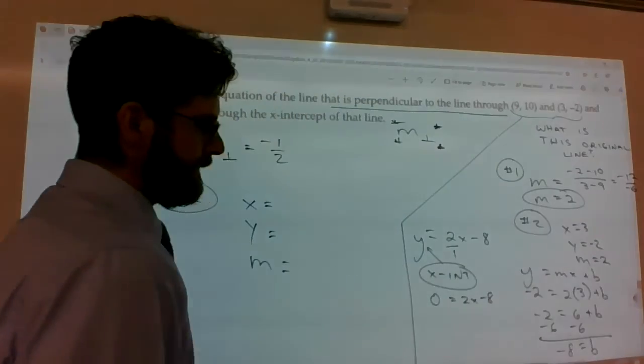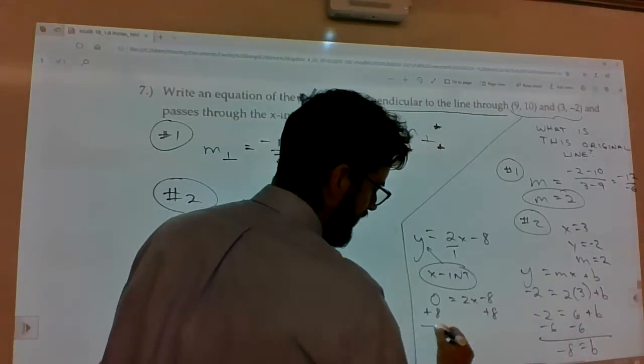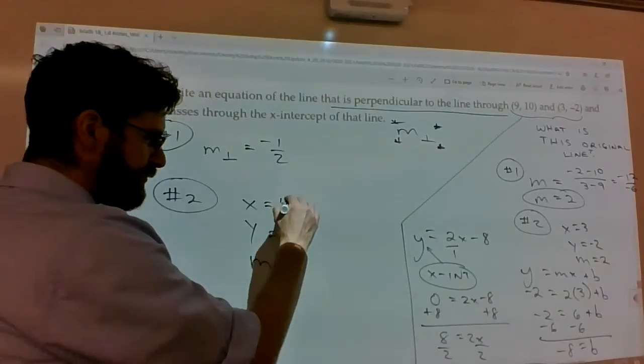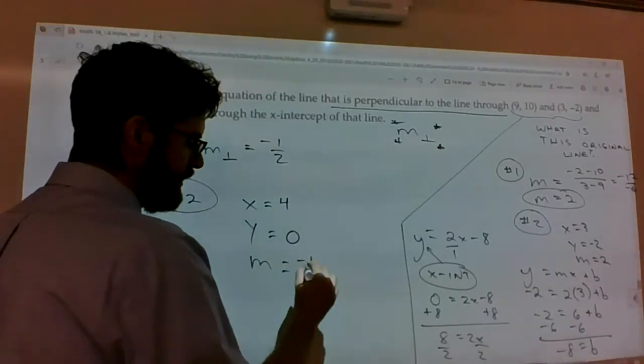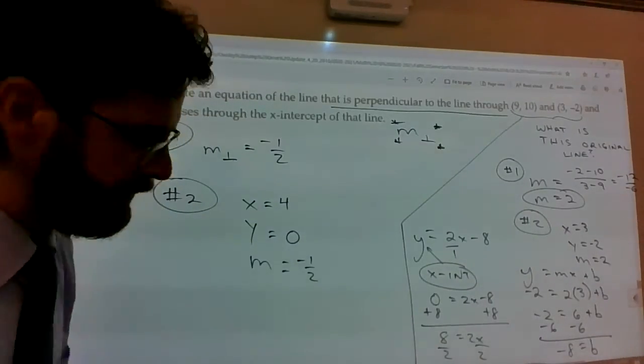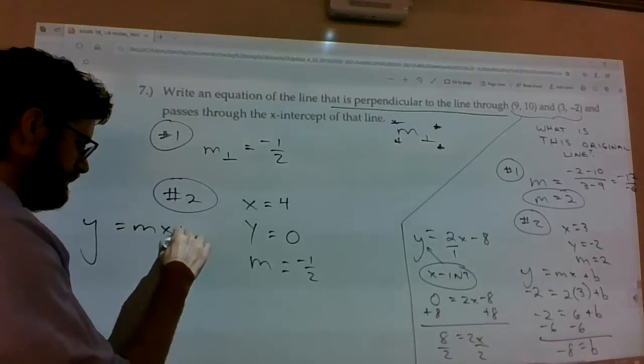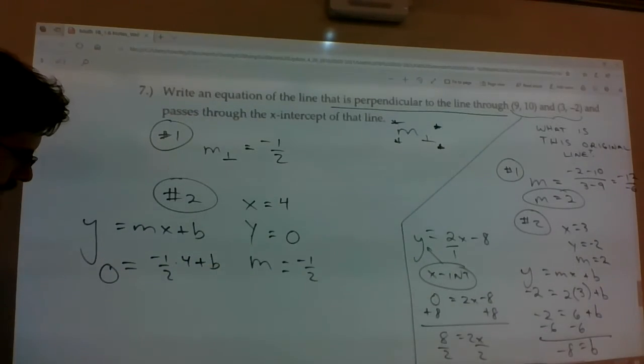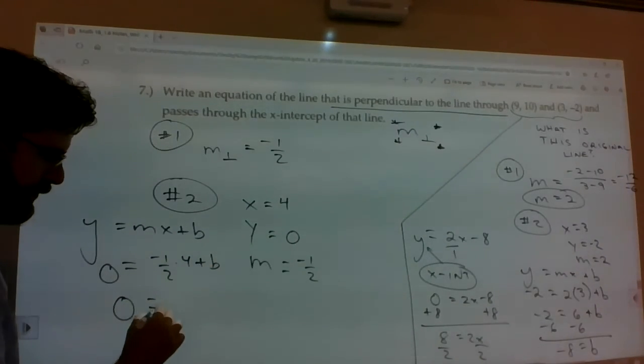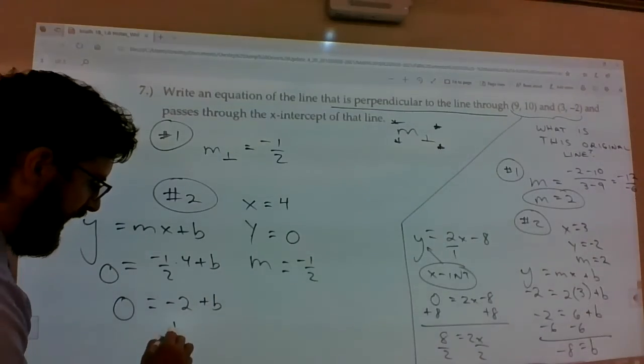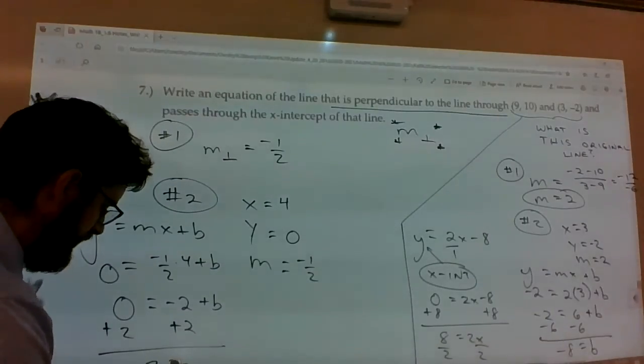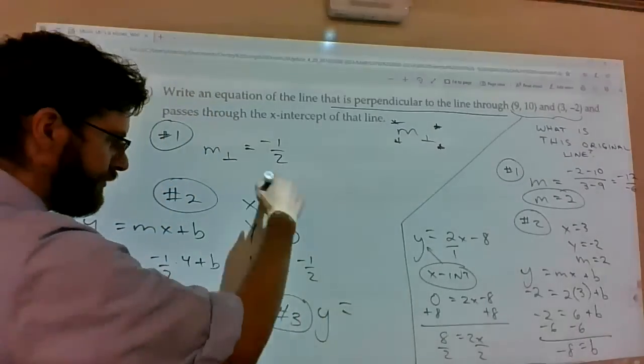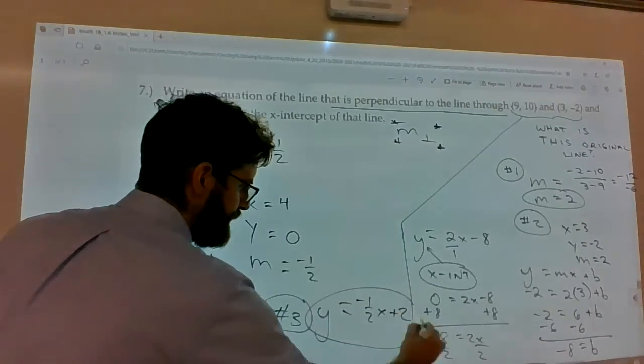So, the idea is you can solve for that x-intercept by getting x by itself. And you get x equals 4. So, x equals 4 when y equals 0, and m is equal to negative 1 half. And then you can plug those into y equals mx plus b. So, 0 equals negative 1 half times 4 plus b. Half of 4 is 2, so it's negative 2 plus b. Add the 2 to the other side. And you get 2 equals b. Therefore, y equals negative 1 half x plus 2 is what we got here.